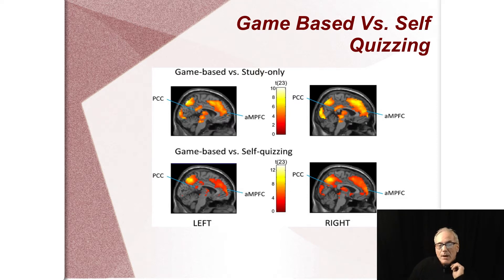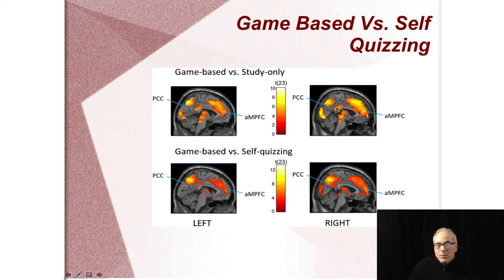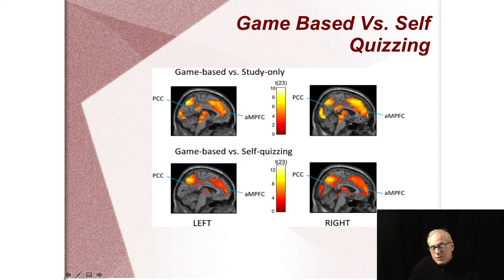Looking at these figures — these are game-based conditions, where the learner was playing a learning game. A simple learning game could be: get this question right, you get 50 bucks; get the next one right, you get 100; get three in a row and you get a bonus of 1,000. This is called a titratable game element — you can move more risk and more game element in and out to titrate it. The subjects on the right are engaging with the same material but only using self-study, going through their notes after a lecture.